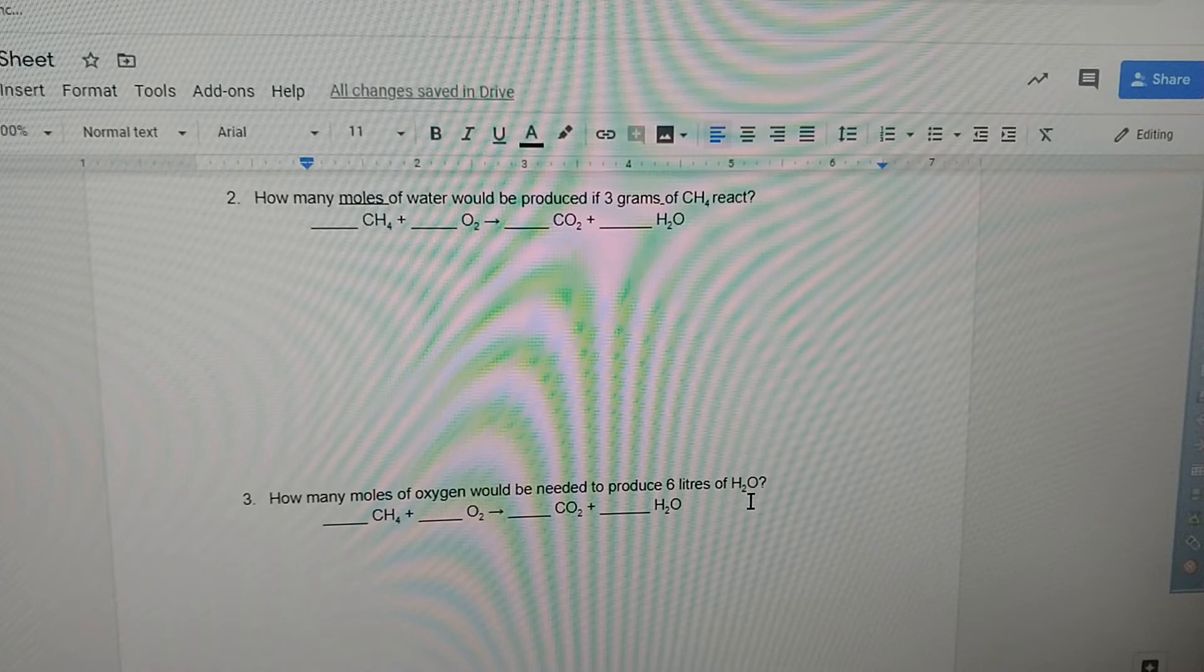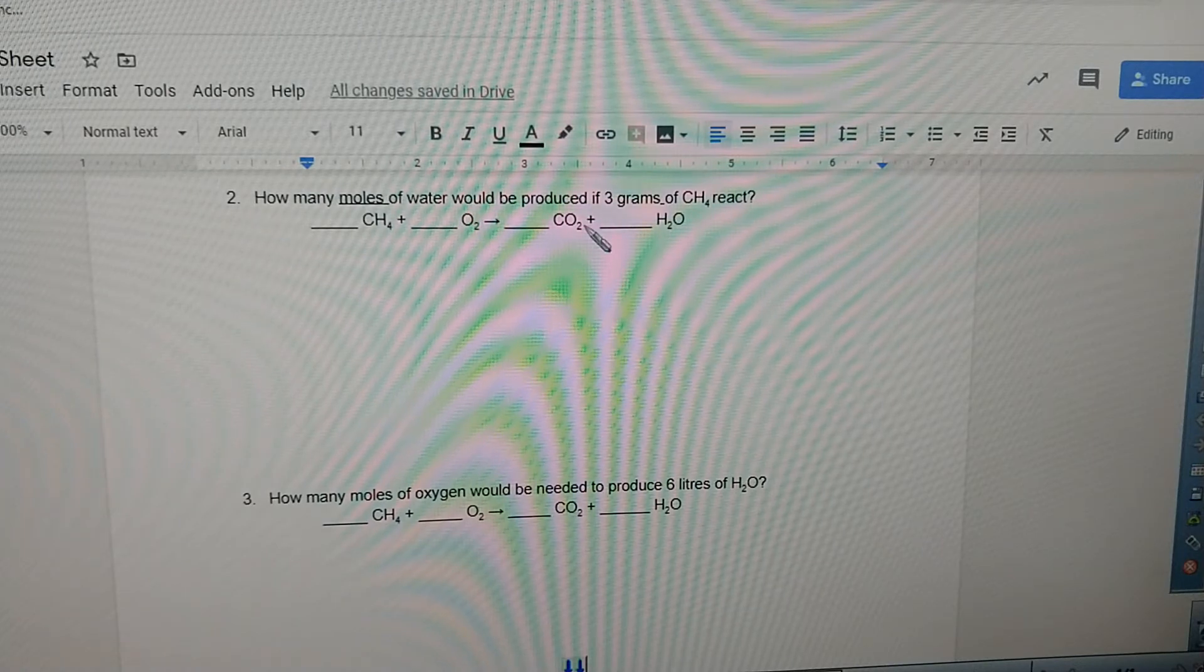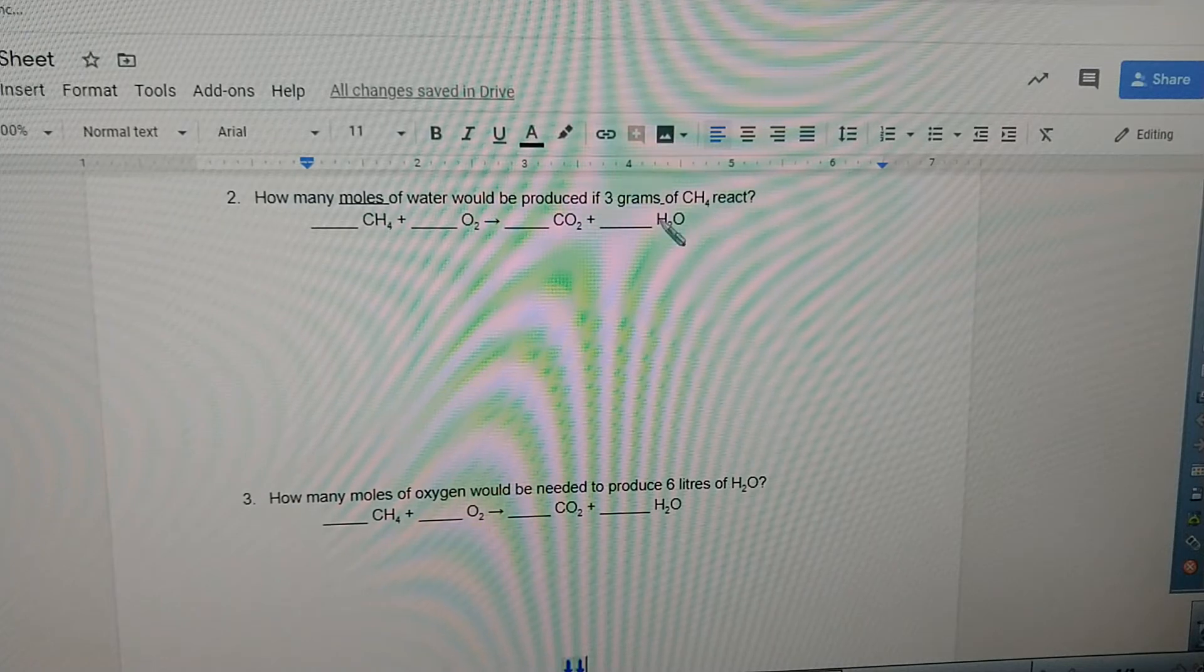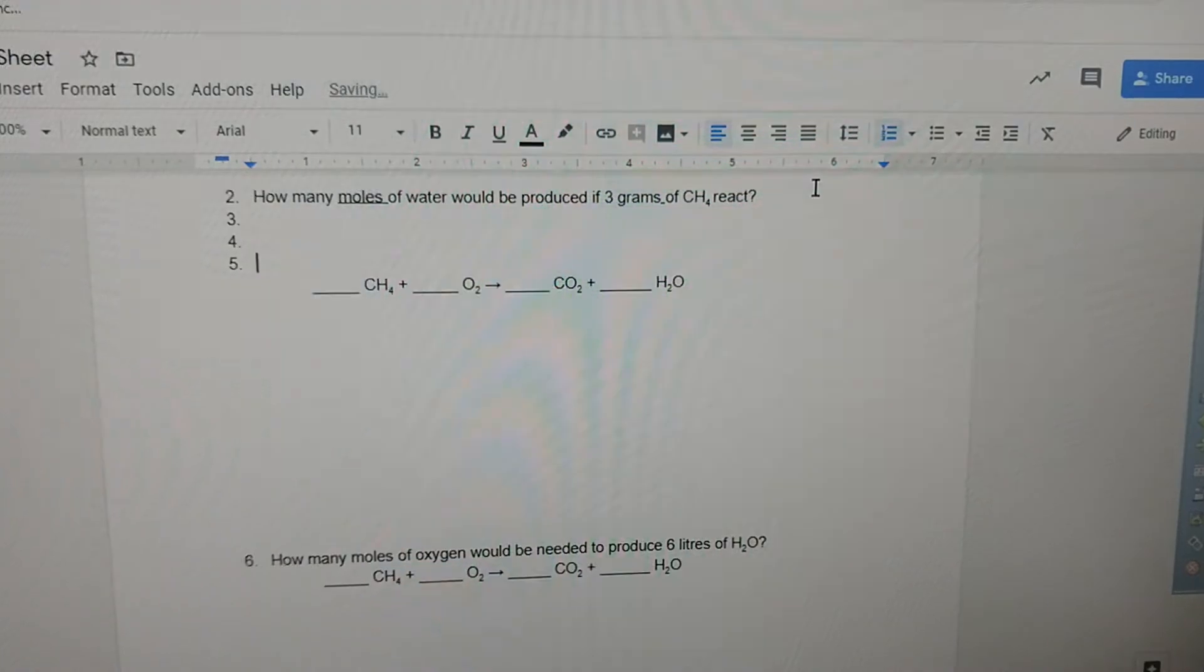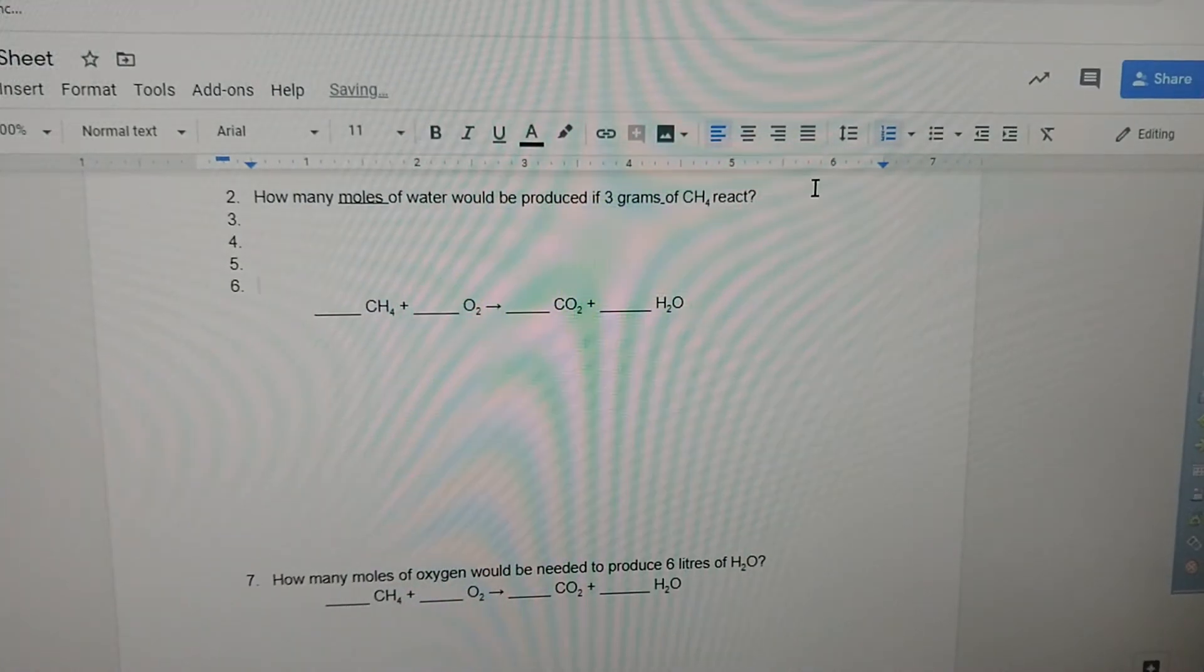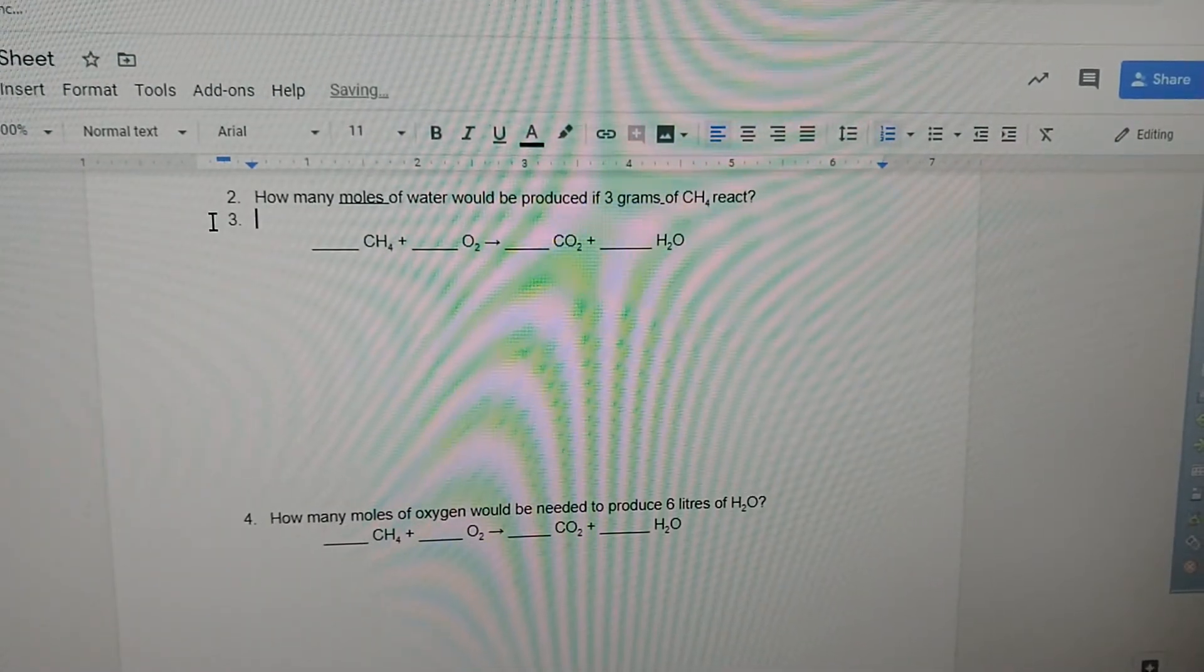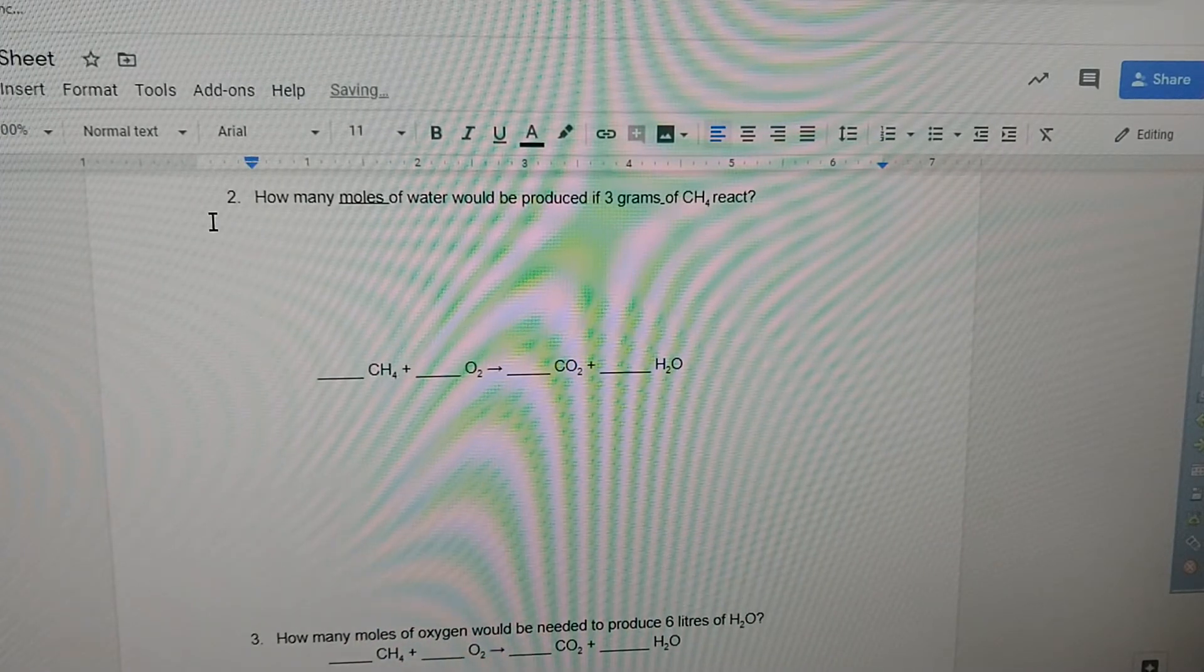You've got the first example right there. I'm gonna work number two, three, four, and five with you and just ask you some questions along the way. Number two: how many moles of water will be produced if three grams of CH4 react? So CH4 is methane. How many moles of water?